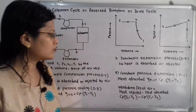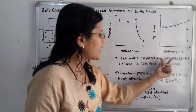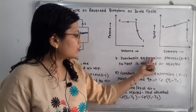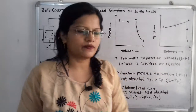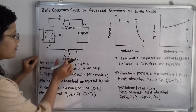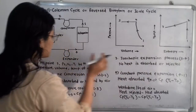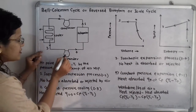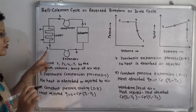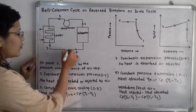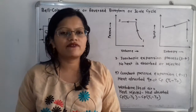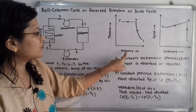The next process is isentropic expansion, where entropy remains constant and the air expands. After coming out of the cooler, the air enters the expander. Before entering the expander is point 3 and after expansion is point 4 — this is process 3 to 4. Entropy remains constant, and expansion means pressure is getting decreased.